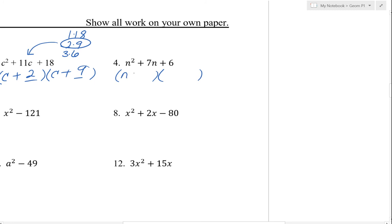n squared plus 7n plus 6, so n times n, multiply to 6, so that's 6 times 1, 2 times 3. We want to add to 7, so 6 times 1.